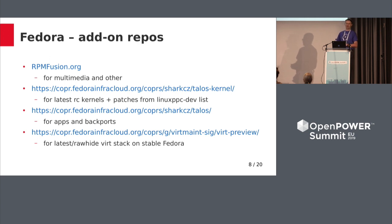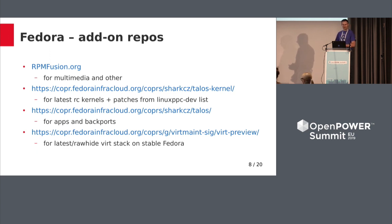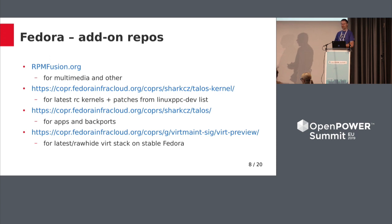Useful stuff for desktop users is RPM Fusion, which carries codecs and similar things for multimedia and other content not available inside Fedora for legal reasons. That's the primary complement everyone wants on a desktop system, and it's available for all Fedora architectures including Power. So you can do anything with multimedia on Power.